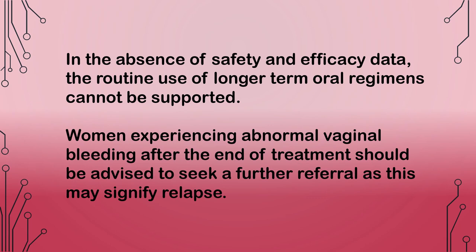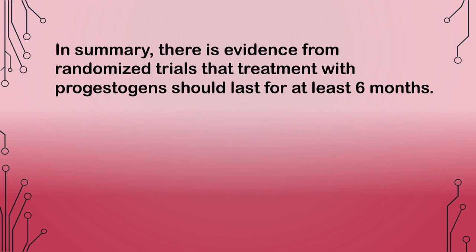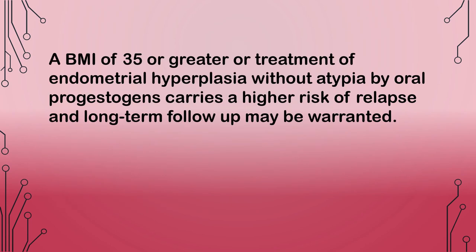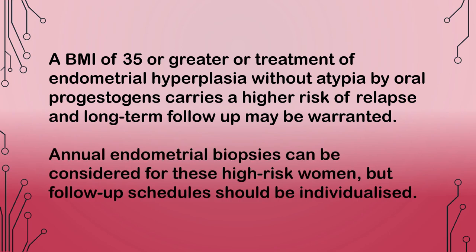Women experiencing abnormal vaginal bleeding after the end of treatment should be advised to seek a further referral as this may signify relapse. There is evidence from randomized trials that treatment with progestogens should last for at least 6 months. If endometrial hyperplasia persists for 12 months despite treatment, the risk of underlying cancer is high and the chances of regression are low such that hysterectomy is advised. A BMI of 35 or greater or treatment by oral progestogens carries a higher risk of relapse and long-term follow-up may be warranted. Annual endometrial biopsies can be considered for these high-risk women but follow-up schedules should be individualized.